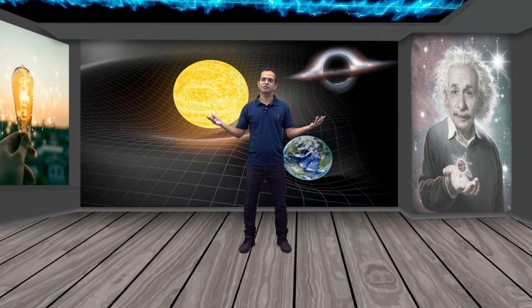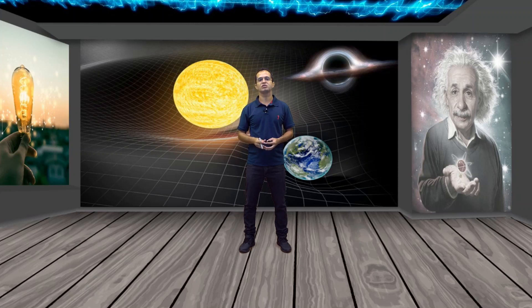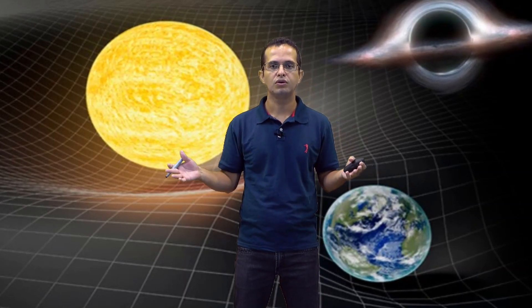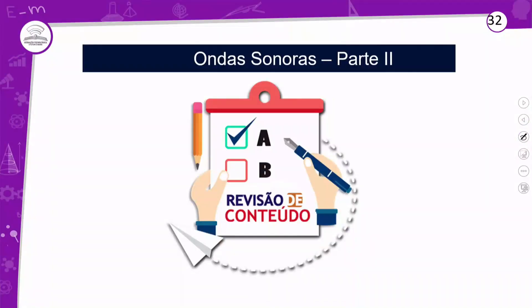E aí, pessoal? Agora nós vamos fazer aquele resumo para depois irmos para as nossas atividades. Falamos aqui de uma aula um pouquinho puxada, mas é só entender melhor como ocorrem aqueles instrumentos que conseguem emitir um som amplificado, intensificado. Podemos falar de saxofone, flauta, um tubo ou uma garrafa com água. Resumo da aula 33, ondas sonoras, parte 2.